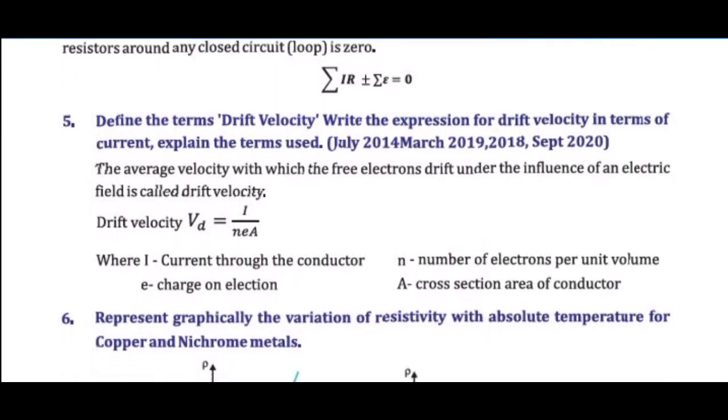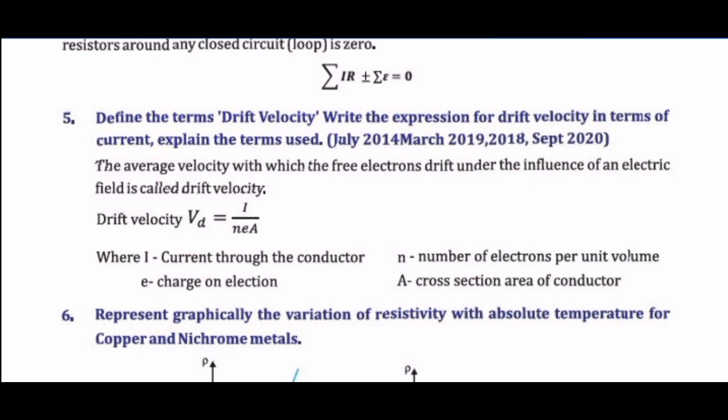Question 6: Define drift velocity. Write its expression in terms of current and explain the terms used. Drift velocity is the average velocity with which free electrons drift under the influence of an electric field.